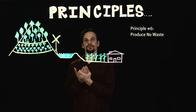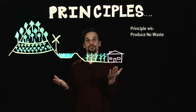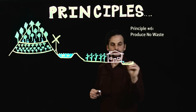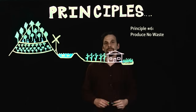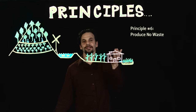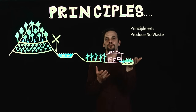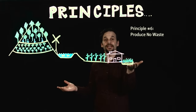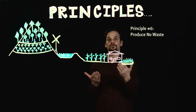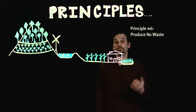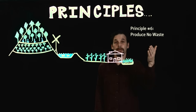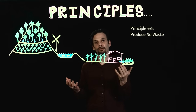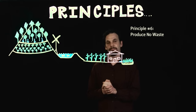Principle 6 is Produce No Waste. This is where we make the waste of one part of our system the food for another. This means we compost, clean and recycle greywater, repair and repurpose broken tools and equipment — reduce, reuse, repair, recycle. This also means we don't waste people by having them do hazardous and meaningless work.